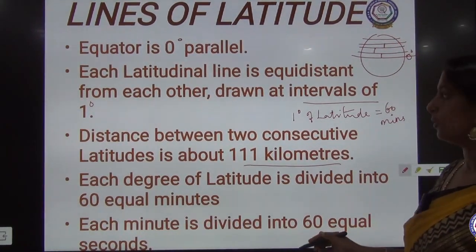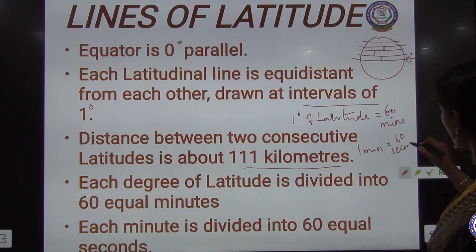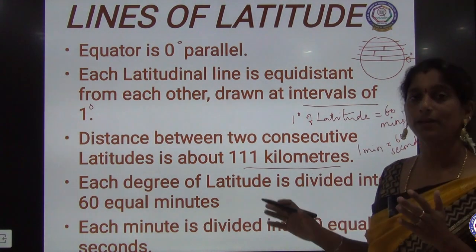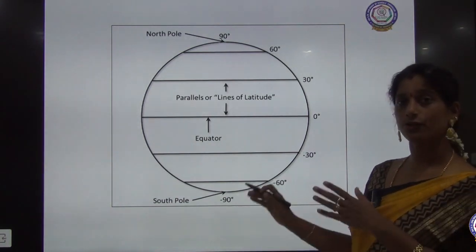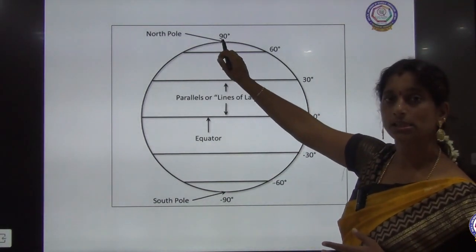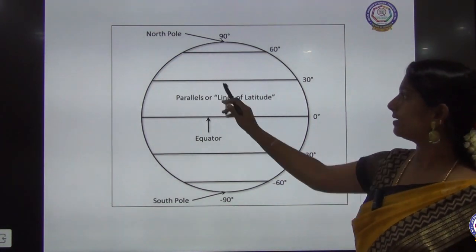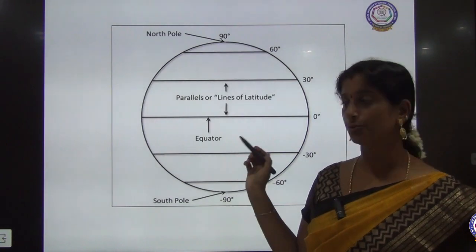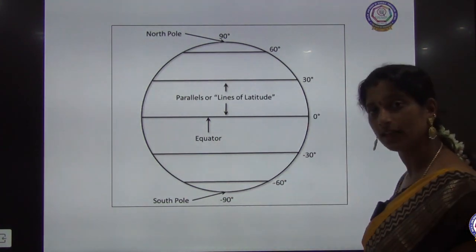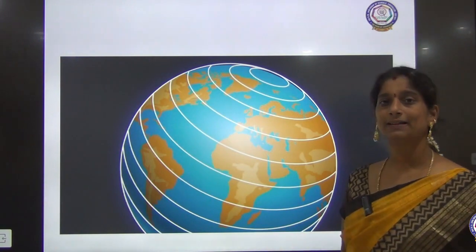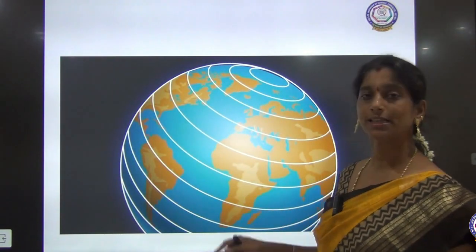One degree of latitude equals 60 minutes, and one minute equals 60 seconds — this is how distance is calculated across the latitudes. Looking at the image of a globe, you can see the North Pole and South Pole, with the equator marked at 0 degrees. The parallels — the lines of latitude — are each marked with a degree value, completing a circle across the globe.